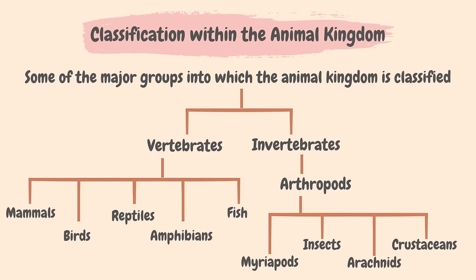The next group of vertebrates are birds. Some characteristics of birds are: they have feathers; they lay eggs with hard shells; they have a beak; and they have wings instead of forelimbs. Examples of birds include toucan, parrot and flamingo. Reptiles are another group of vertebrates — they have scaly skin and they lay eggs with rubbery shells. Snakes, crocodiles and turtles are some examples of reptiles.